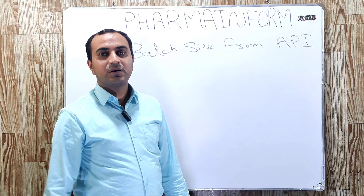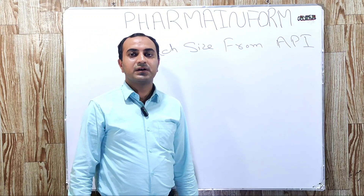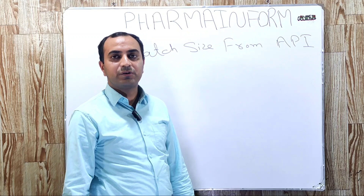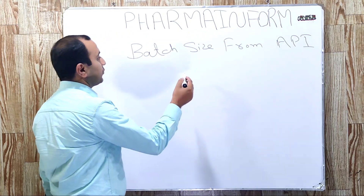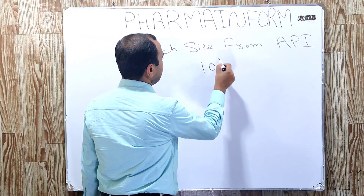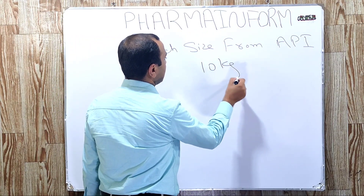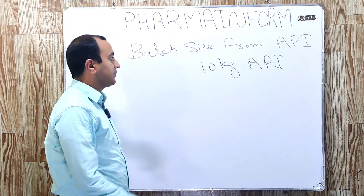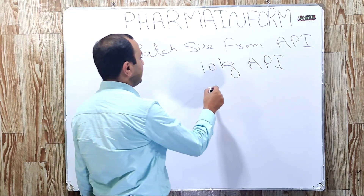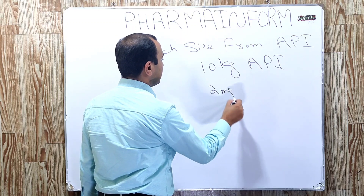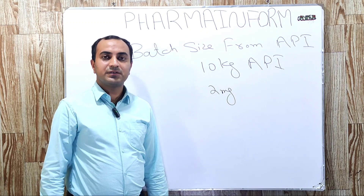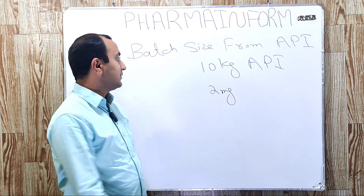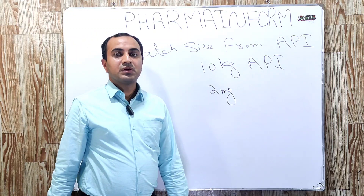Sometimes we are asked to calculate the number of tablets from a given quantity of API. Suppose we have 10 kilograms of API and each tablet contains 2 milligrams. So it is asked to calculate the number of tablets from 10 kg.